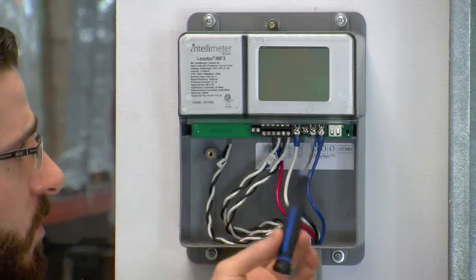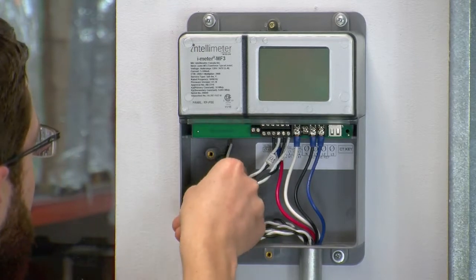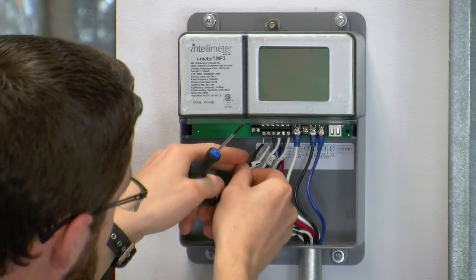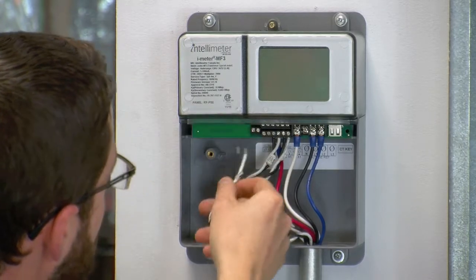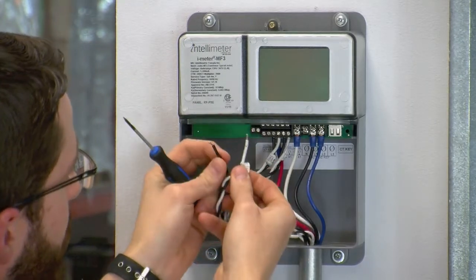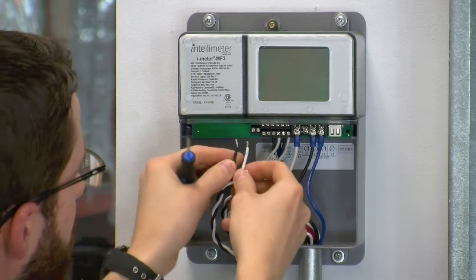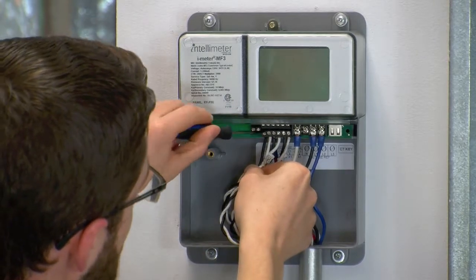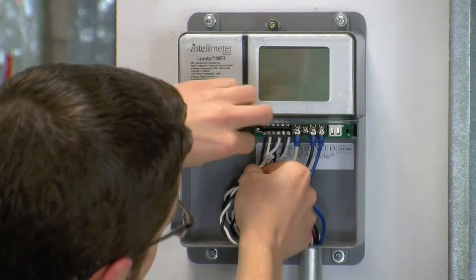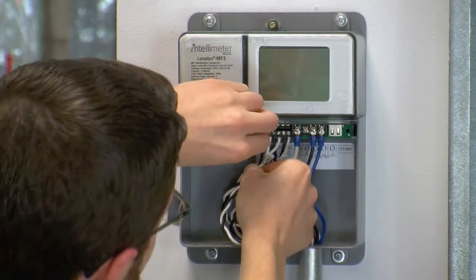So using a precision screwdriver, you're going to terminate the CT leads into their corresponding terminal strips. Here we use the bottom terminal strip for CTs 1, 2, and 3. So starting with CT1, we use black for negative and white for positive. As you go, you're going to want to double check your labels on your CT leads to ensure that each CT is being terminated into its correct slot.